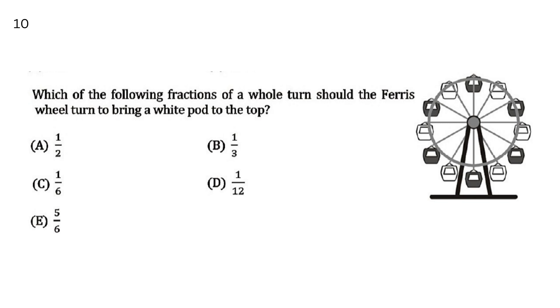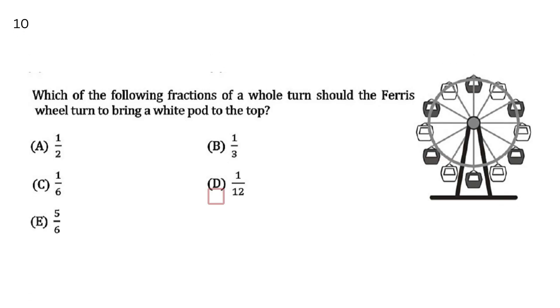Which of the following fractions of a whole turn should the ferris wheel turn to bring a white pod to the top? What fraction of a whole turn will the ferris wheel turn so the white pod comes to the top? The answer will be D, 1 by 12.